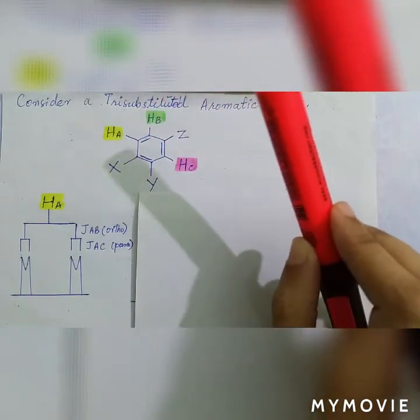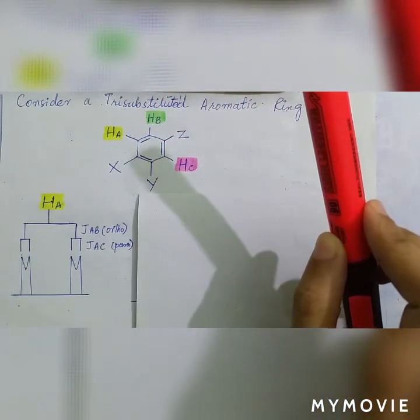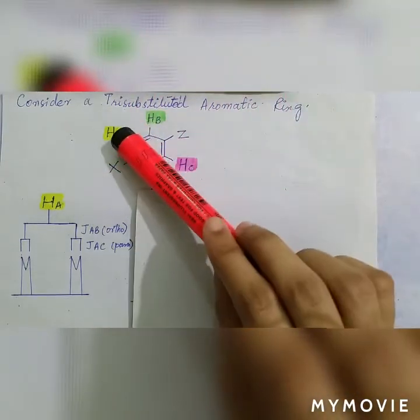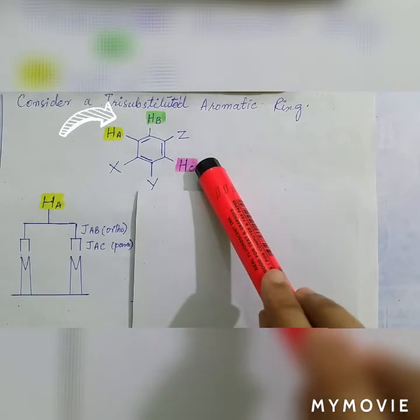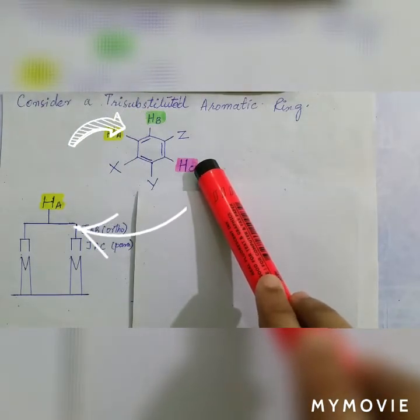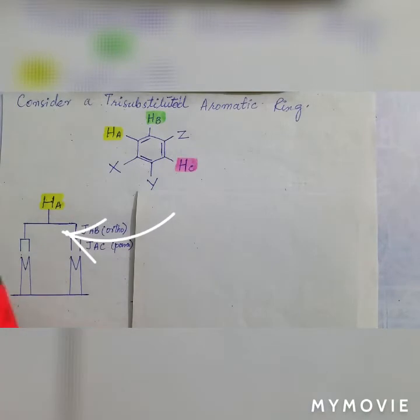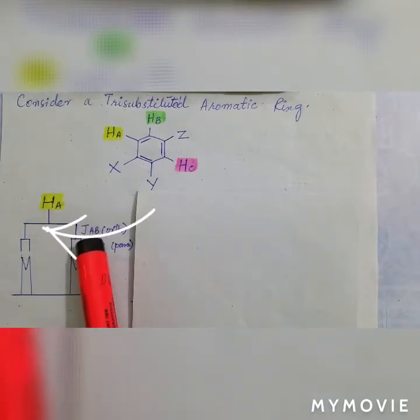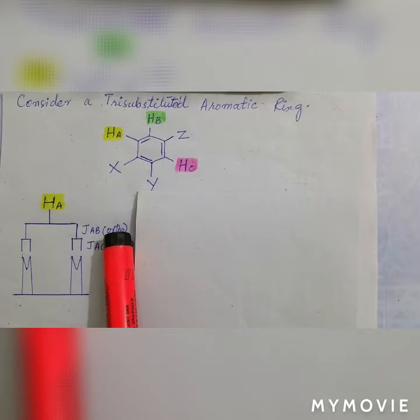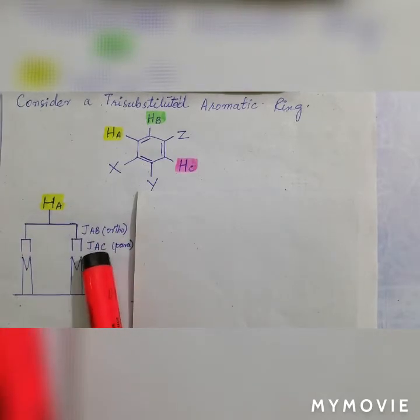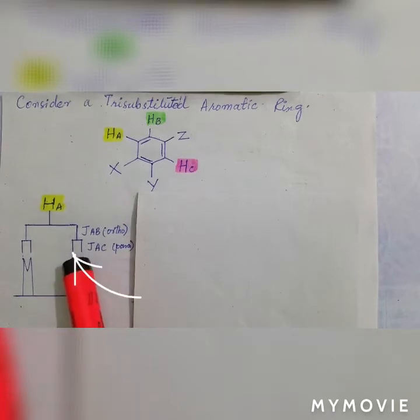In the splitting diagram, you can see that HA is giving two types of splitting. First, splitting is with proton B, because B is at ortho position, its splitting is wider. And you know that ortho splitting has larger values compared to meta and para, which is between 6 to 10 hertz.